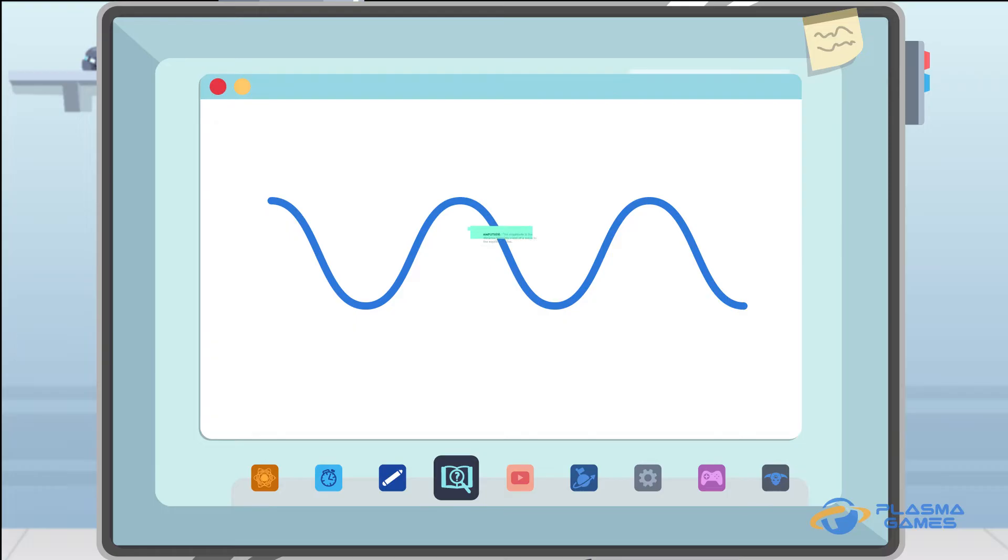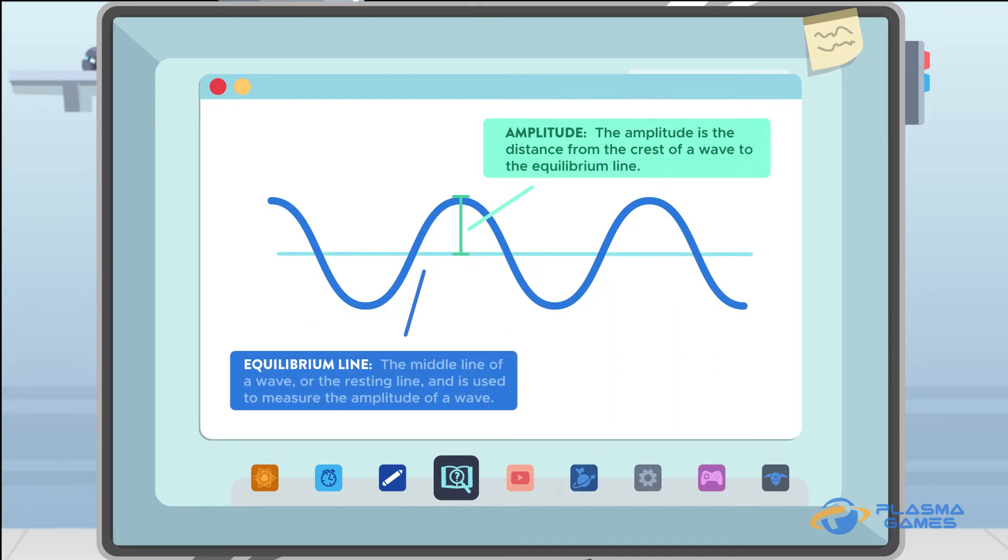You effectively changed the amplitude of the wave. The amplitude is the distance from the crest of a wave to the equilibrium line. The equilibrium line is the middle line of a wave, or the resting line, and is used to measure the amplitude of a wave.